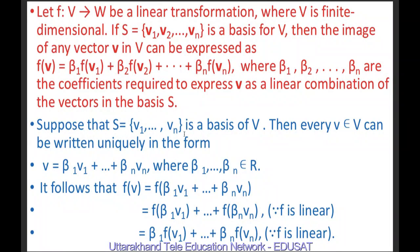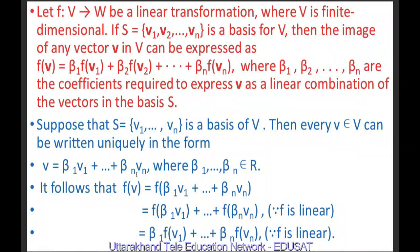Suppose S = {V1, V2, ..., Vn} is a basis of V. Then every v belonging to V can be uniquely expressed as v = β₁V1 + β₂V2 + ... + βnVn, where β₁, β₂, ..., βn belong to R. Since S is a basis for V, every element in V can be expressed as a linear combination of elements of S. This implies F(v) = F(β₁V1 + ... + βnVn).